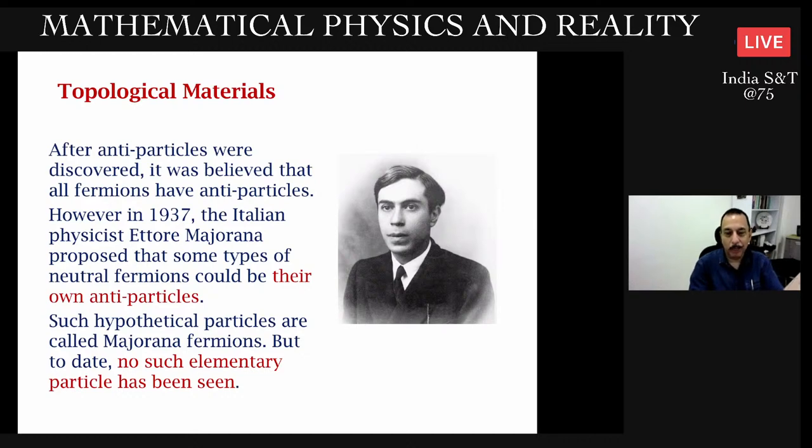He wrote down a formula which modified Dirac's equation in a way that made it clear one can have such particles, and they got named Majorana fermions - a hypothetical type of fermionic particle which is its own antiparticle. Unfortunately, to date, no such elementary particle has ever been seen. The other interesting thing is that at a certain point Ettore Majorana himself was never seen again. He mysteriously vanished at a young age.